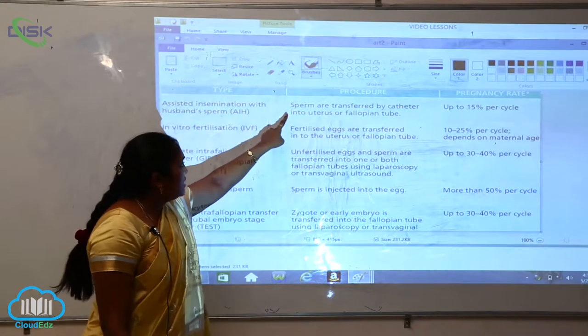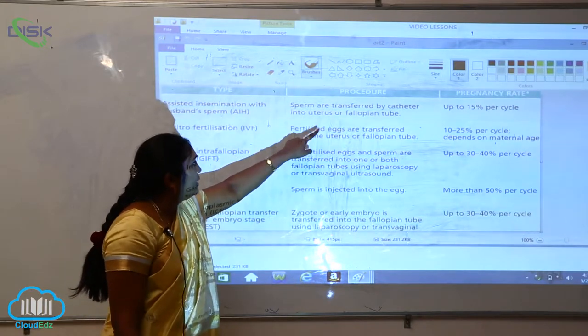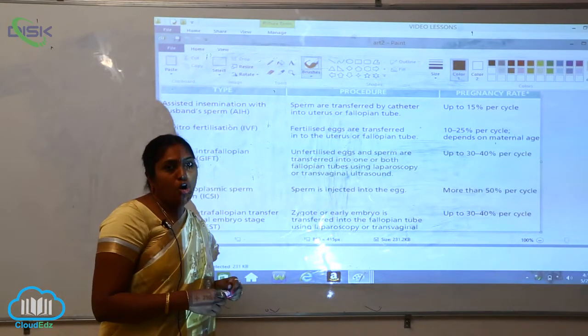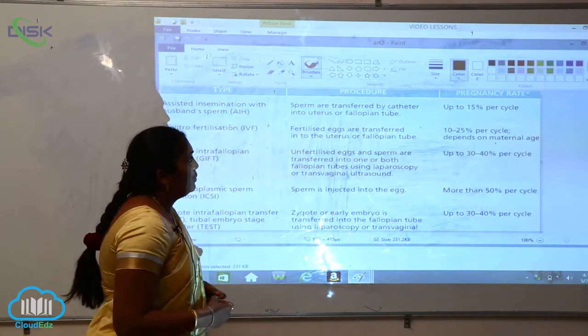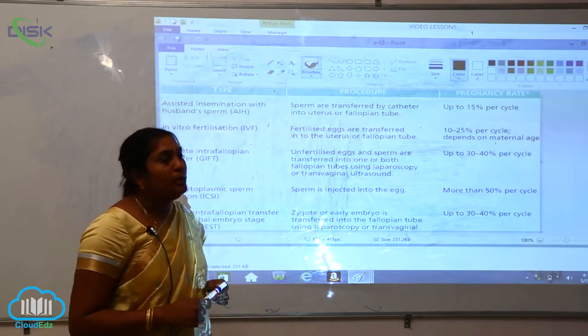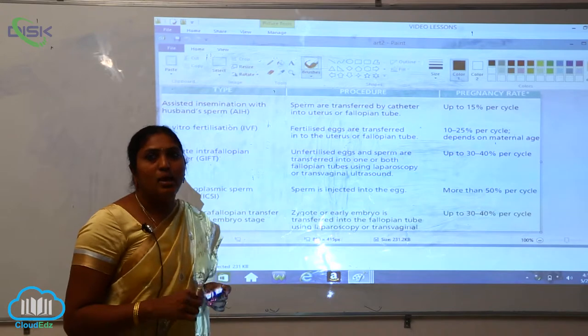What is the procedure here? The sperms are transferred by catheter into the uterus or the fallopian tube. The pregnancy rate here is only up to 15 percent per cycle.